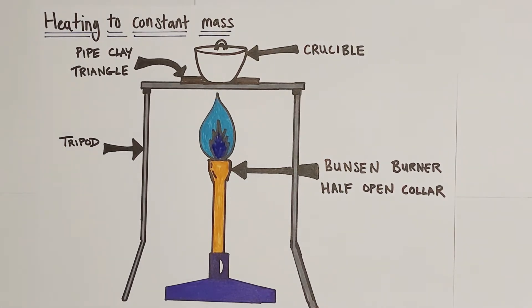Just a quick rundown of what we've got here. We have our Bunsen burner on a half open collar so we've only got a blue flame, not a roaring flame, so not the most intense heating but strong enough to drive off the water. A tripod is being used to hold a pipe clay triangle, which is just a ceramic triangle which will hold the vessel we're heating, and then we're using a crucible to actually contain the hydrate itself. We use a ceramic crucible because ceramics are very heat resistant and it's unlikely to break or crack under that intense heating.